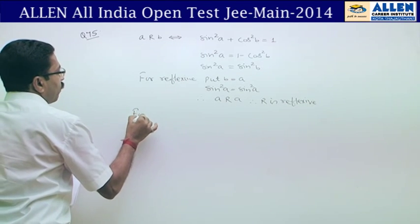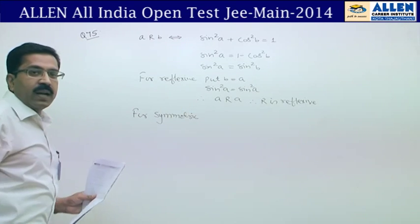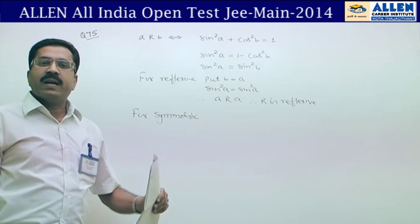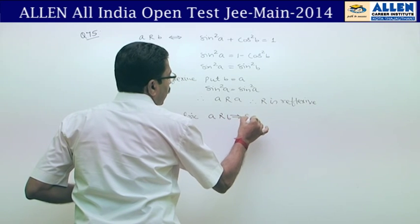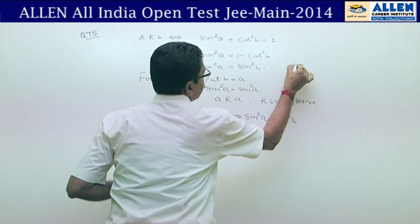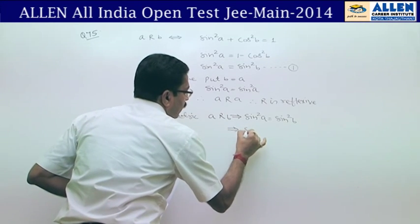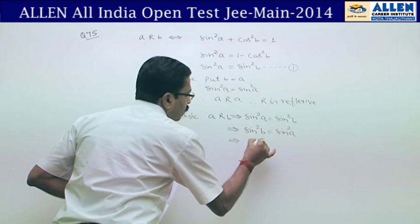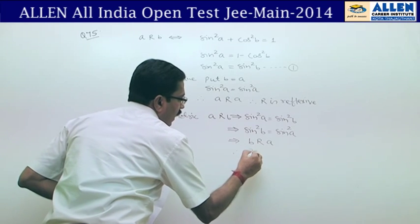Next, for symmetric: we let a be related to b, then check if b is related to a. A related to b implies sin²a = sin²b. From this, sin²b = sin²a, that is, b is related to a. A is related to b and b is related to a, therefore R is symmetric.